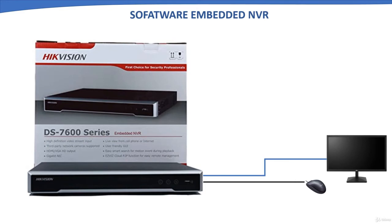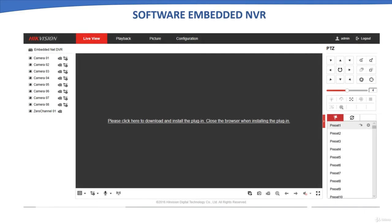Software-embedded NVRs come with pre-loaded video recording software, so there is no need to install external software on a workstation. A monitor and mouse are directly connected to the NVR for live view, playback, and configuration — including setting date and time, video settings like resolution, FPS, bitrate, and storage settings.